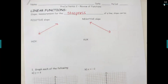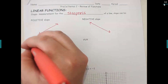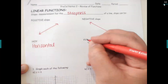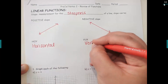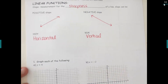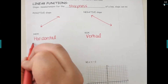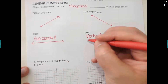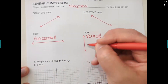Your line could be uphill, downhill, or it could be horizontal or vertical. The acronyms we're going to use to remember those are HOY and VUX, which you should have seen before. Write 'horizontal' under HOY and 'vertical' under VUX. A horizontal line should cut straight across the page and stay perfectly flat, versus a vertical line should be straight up and down.